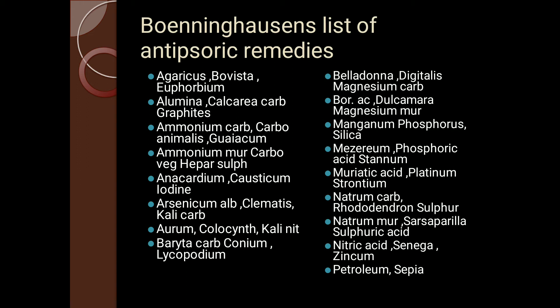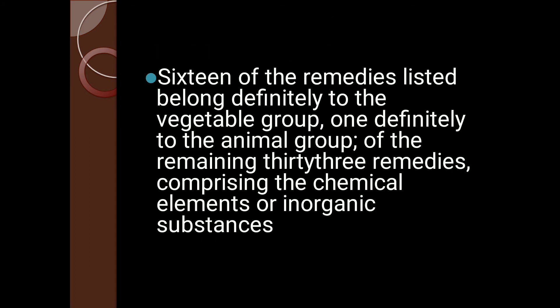In the Psora or deficiency chapter, Dr. Roberts has given Boenninghausen's list of antisoric remedies, including Agaricus, Alumina, Ammonium, Baryta Carb, Conium, Belladonna, Muriatic Acid, and Natrium Muriaticum. Of 50 remedies listed, 16 belong to the vegetable group, one — Sepia — to the animal group (also called animal carbon), and the remaining 33 remedies are chemical elements or inorganic substances, meaning the highest number are from the mineral kingdom.